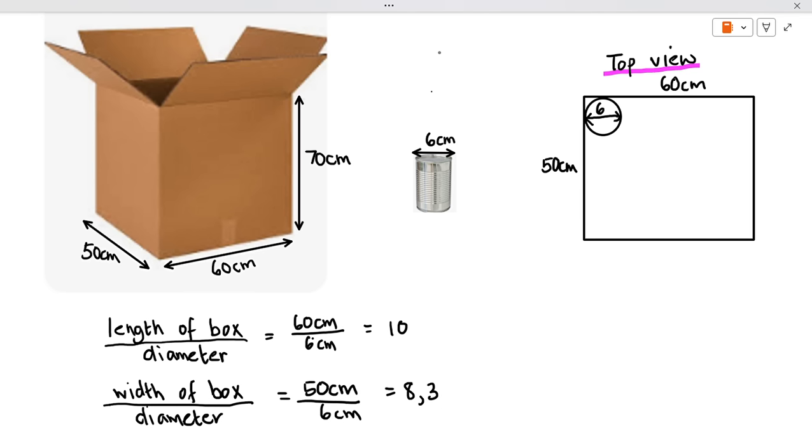We can't have 8.3 tins, and what we need to remember is that with tins you can't round up, you're always going to round down because we're talking about fitting these tins into the box. So therefore we're going to say approximately eight tins.